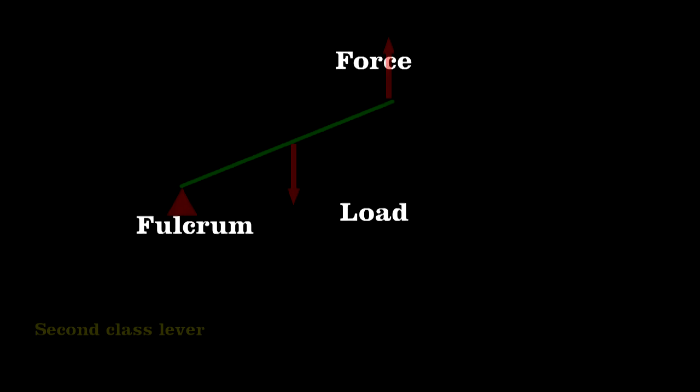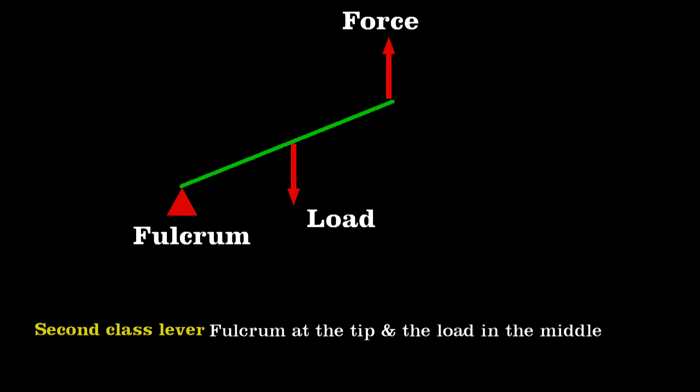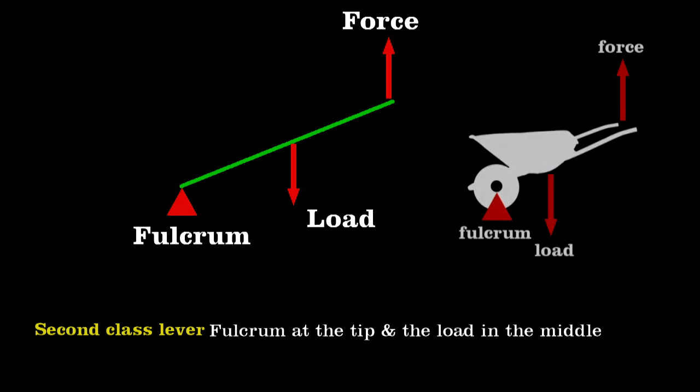Recall that the arrangement of three components, the fulcrum, the force, and the load, determines the class of a lever. A second-class lever pulls on the load in its middle, with the fulcrum and force at each end. An everyday example is a wheelbarrow.